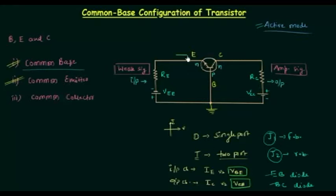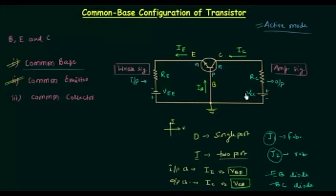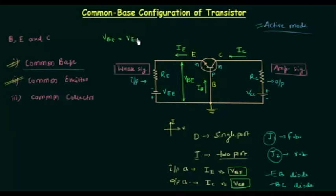From the symbol of the transistor you can see the direction of emitter current IE, the direction of base current IB, and the direction of collector current IC. If you don't know how we obtained these directions, please watch the previous lecture. VBE is this potential, and if you neglect RE — as I did in the previous presentation for simplicity — then VBE is equal to VEE. Similarly, VCB is the potential difference across the base and collector, and VCB equals VCC if we neglect RC.